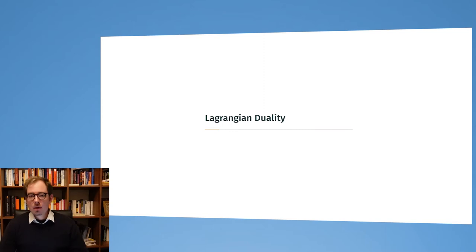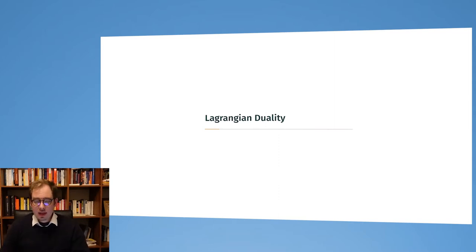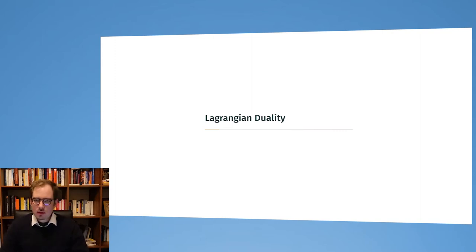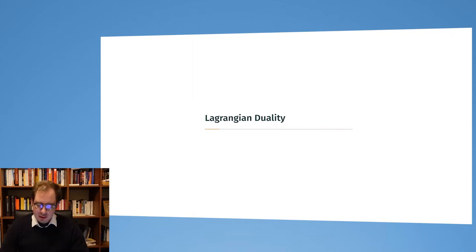Now let's take a closer look at Lagrangian duality. This is only one type of duality in optimization, so we need to be precise about which duality we are talking about. Lagrangian duality is often presented by just stating facts about the dual representation, but here we will take an approach to really understand the material, developed from the point of view of game theory — this is not found as often as I would prefer, but it will enable some insights we wouldn't get otherwise.